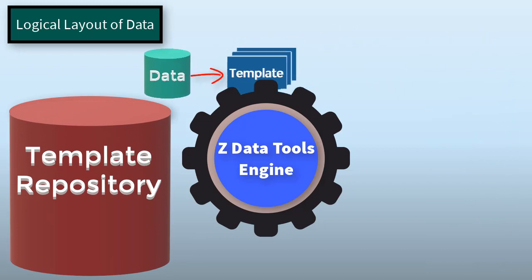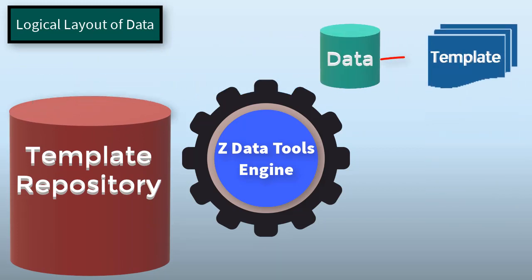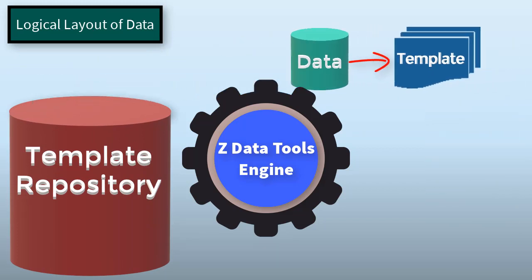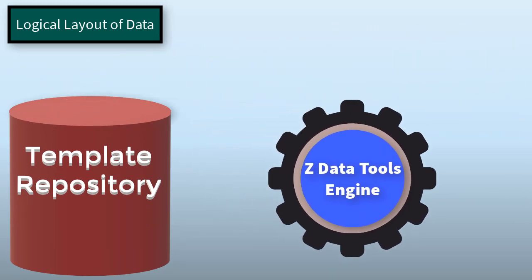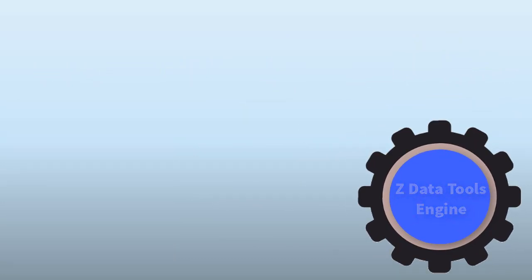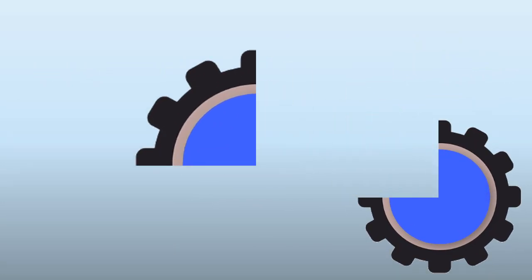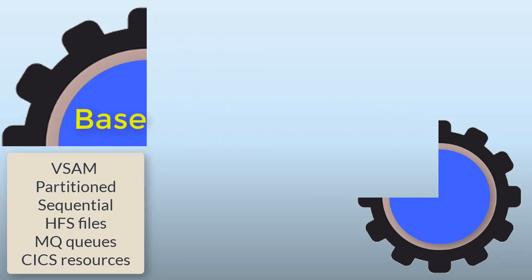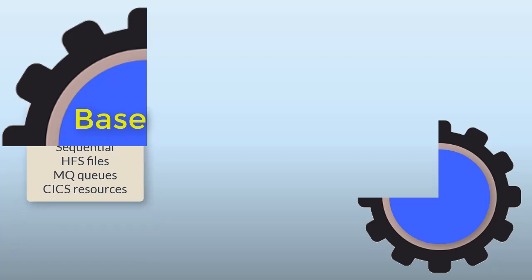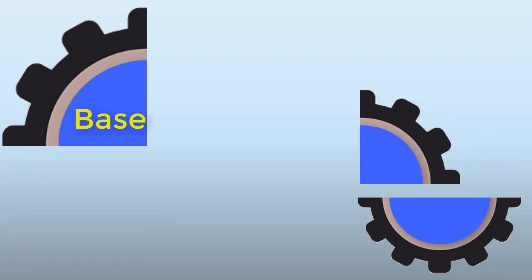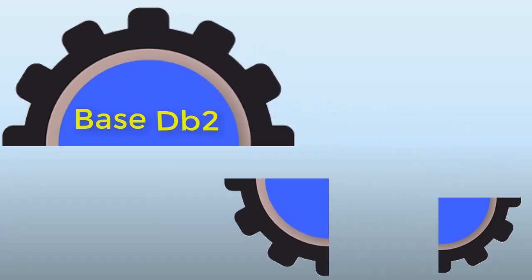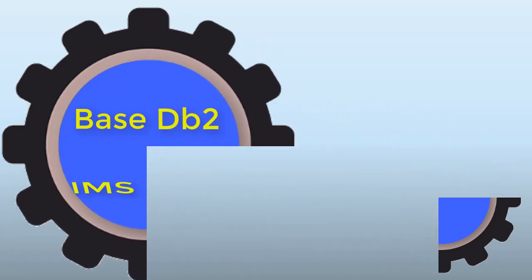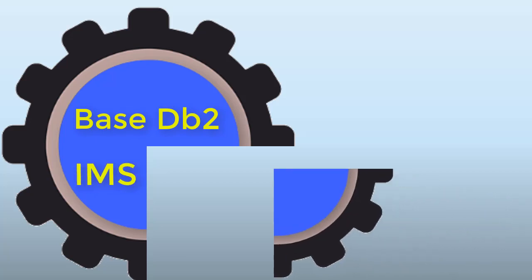The repository helps the administrator identify which templates belong to which data source. The product is split into three major components: Base to handle VSAM partitioned, sequential and HFS files as well as WebSphere MQ queues and CICS resources; DB2 for DB2 databases; and IMS for IMS databases.